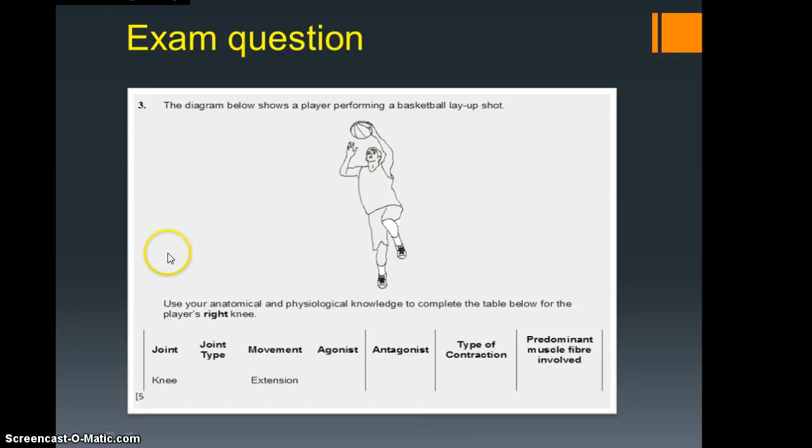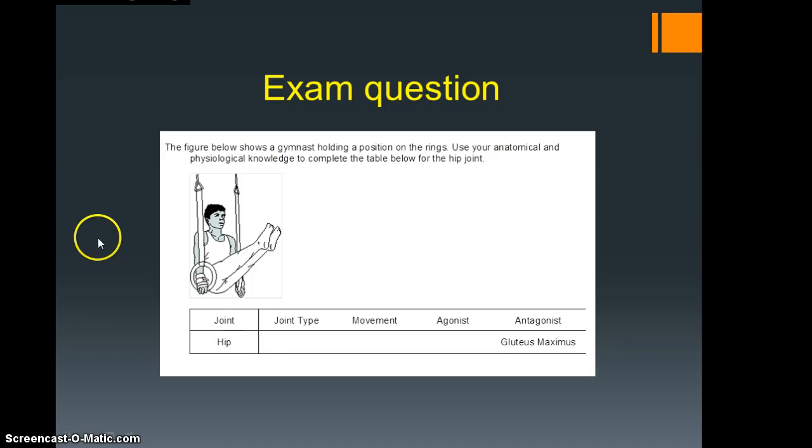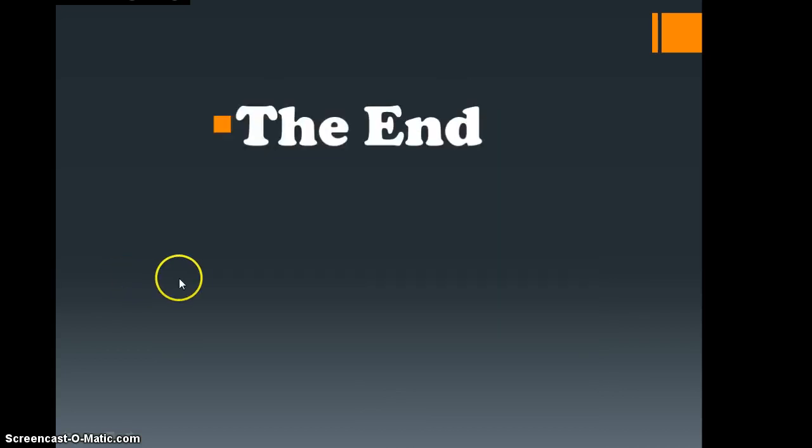Let's very quickly look at what this would be like in an exam question. So again we've got to identify what the joint is. Here we're looking at the joint type, so we need to know that. And here, this is how it will manifest in an exam: the movement. So we've got to know the type of movement that's taking place. Let's have a look at another one here. This one is talking about the hip joint. We need to identify the type, and we also need to identify the type of movement that's occurred at that hip joint.